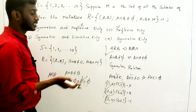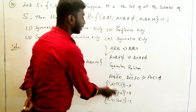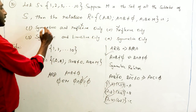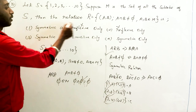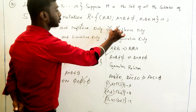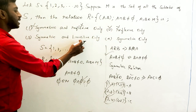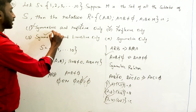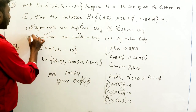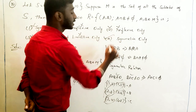So R is not reflexive, symmetric, and not transitive. Among the four options, reflexive-only is not the answer, symmetric-and-reflexive is not the answer, symmetric-and-transitive is not the answer. Therefore, the correct answer is the fourth option: symmetric only.